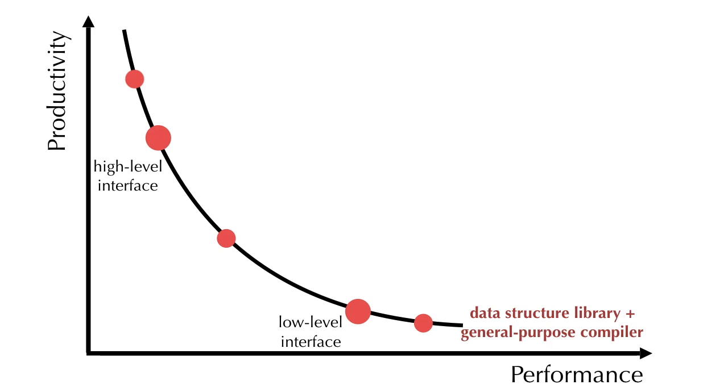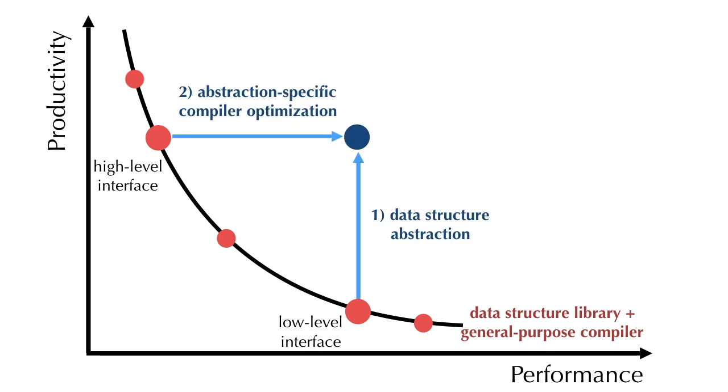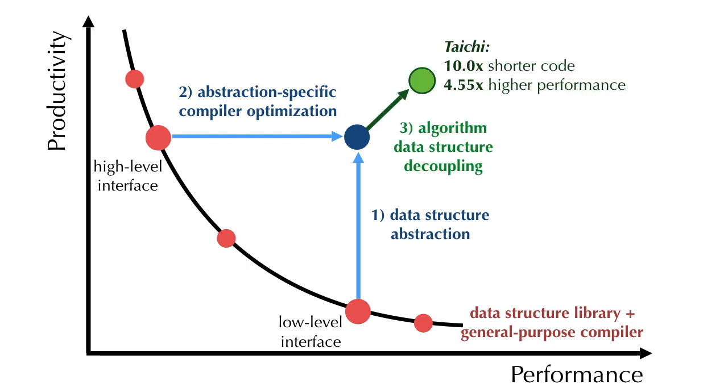Tai Chi removed this trade-off thanks to the data structure abstraction that makes sparse data structures as easy to use as dense ones, and the Tai Chi compiler that does spatial optimization for the data structures. Further, since Tai Chi decouples data structures from computation, programmers can now freely explore different data structures and pick one that works best for a specific problem and a specific computer architecture. The three designs here enable Tai Chi programmers to write 10x shorter code while getting 4.6x higher performance.